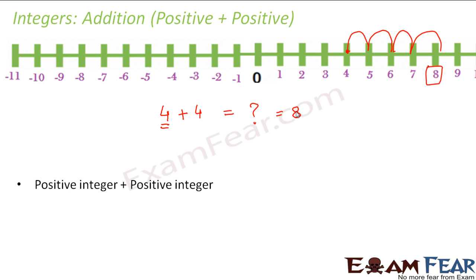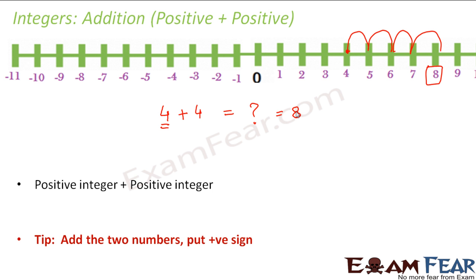Whenever we add a positive integer with another positive integer, the tip to remember is: add the two numbers and put a positive sign, because when you add two positive integers the result would also be positive. Let us take one more example.